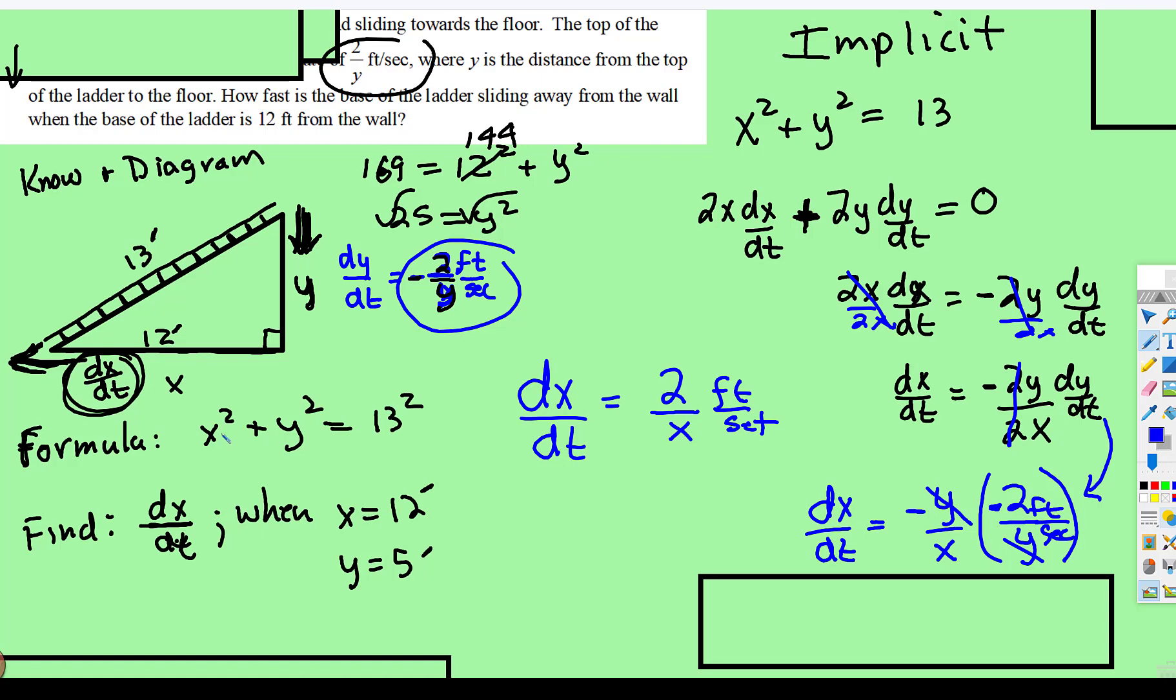And look at what we have. It's at that exact moment when x is equal to 12. Well, 2 twelfths simplifies, 2, 1/6. And that's feet per second. Just like that. We'll keep that into account.